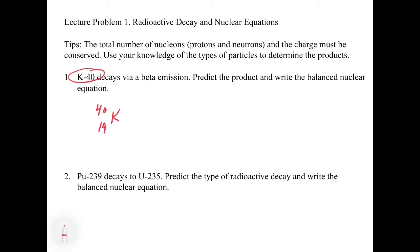It says it does a beta emission. So now we have to remember what is a beta particle. Well, a beta particle is 0 over -1 e. It's basically an electron.